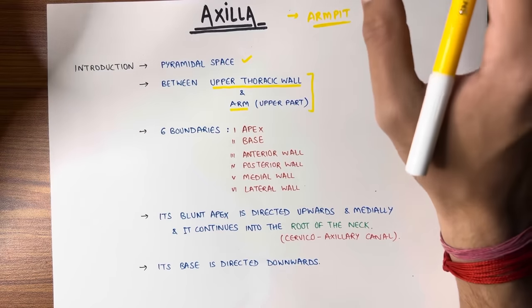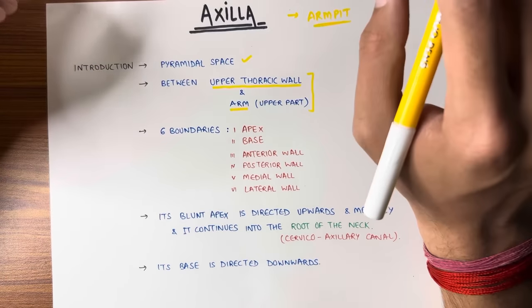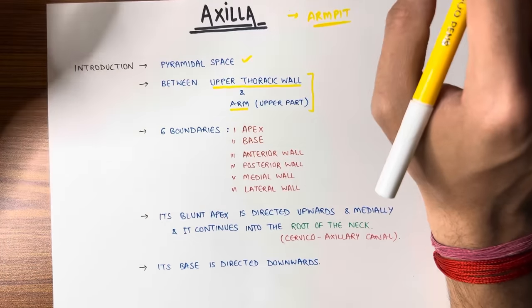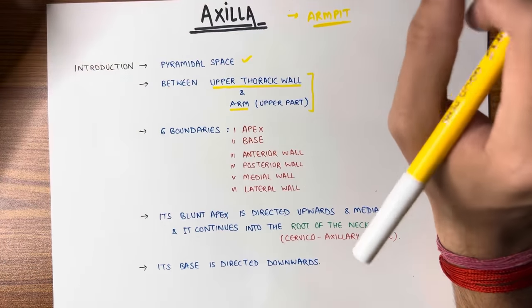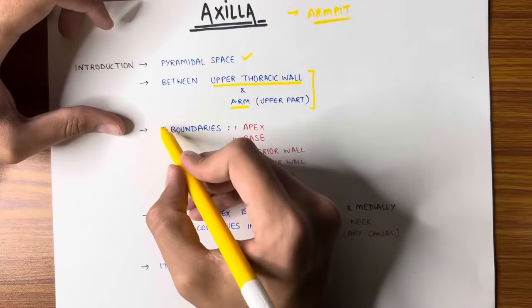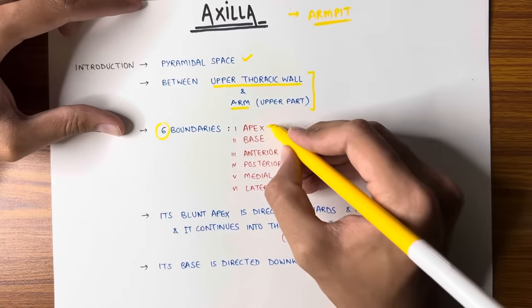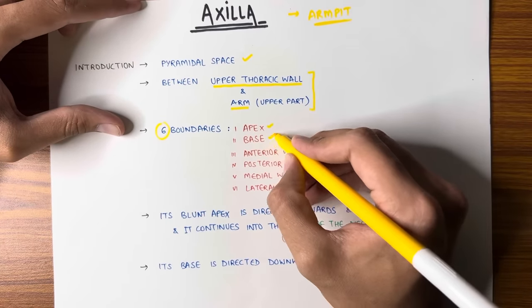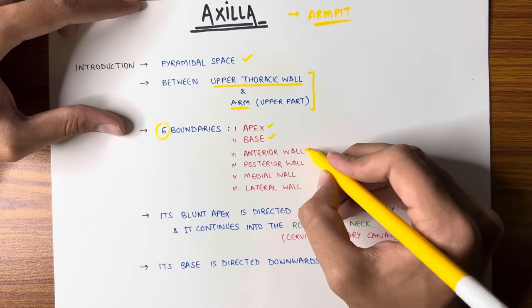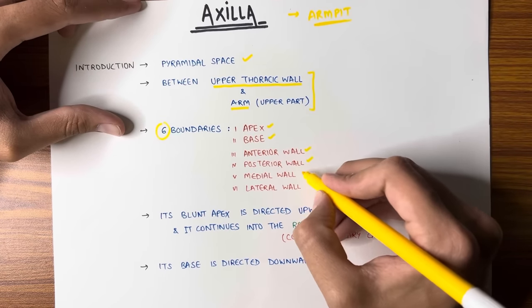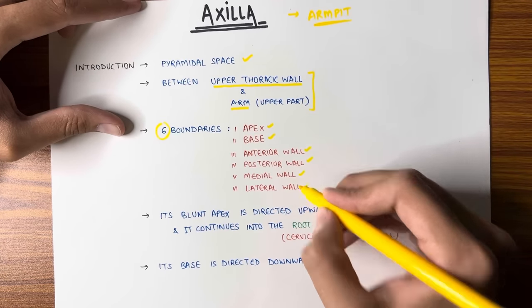Now we have to understand: there are total six boundaries of the axilla — apex, base, anterior wall, posterior wall, medial wall, and lateral wall.